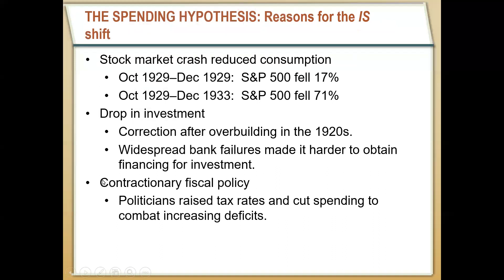First, he said that this leftward shift could have come from the stock market crash in 1929. As the value of stocks started to go down, total household wealth declined. As total household wealth declines, people have to cut back on spending — basically, they're just not as wealthy and can't spend as much. But he also said the Great Depression was more complex than just the stock market.